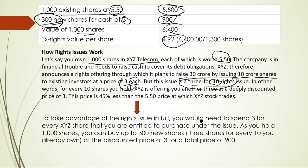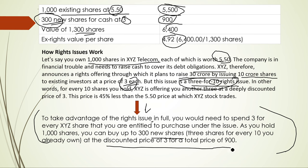This gives us the total rights value per share. To take advantage of the rights, you would need to spend 3 rupees for every share you are entitled to purchase. Since you hold 1,000 shares, you can buy up to 300 additional shares at the discounted price. As a shareholder, you are eligible for this benefit only against your existing 1,000 shares.